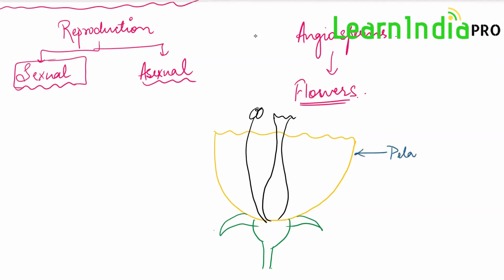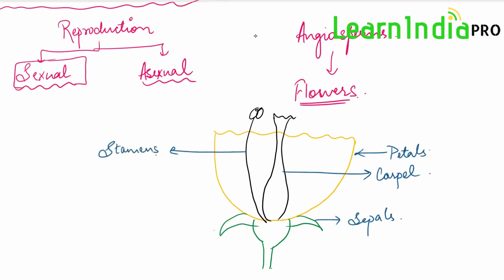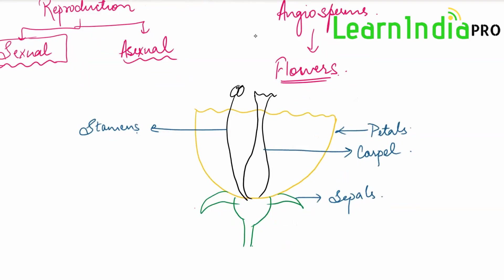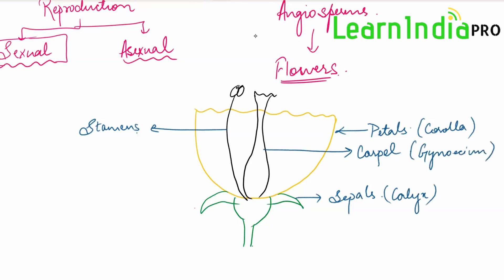So the flower is composed of colorful parts called petals, green leafy parts called sepals, the female reproductive part called carpel, and the male reproductive part called stamens. As you may have seen in Morphology of Flowering Plants, the complete set of petals is called the corolla, the complete set of sepals is called the calyx, the complete set of carpels represents the female reproductive part called the gynoecium, and the complete set of stamens represents the male reproductive part called the androecium.